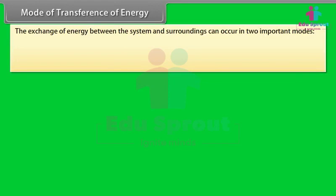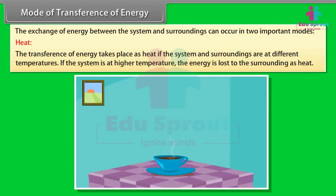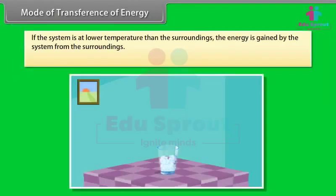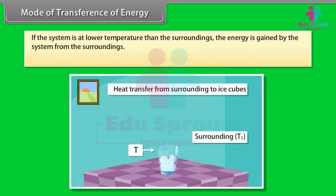The exchange of energy between the system and surroundings can occur in two important modes. Heat: the transference of energy takes place as heat if the system and surroundings are at different temperatures. If the system is at higher temperature, the energy is lost to the surroundings as heat. If the system is at lower temperature than the surroundings, the energy is gained by the system from the surroundings. Heat is represented by Q.